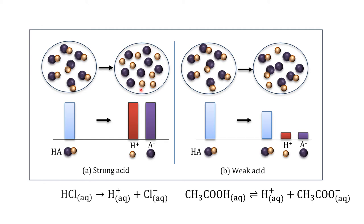If we look at it quantitatively: if you have one mole of acid, by stoichiometry one mole of acid gives one mole of proton and one mole of chloride ion. So the amount of proton present at the end is exactly the same as the initial amount of acid. At the end state we see only positive and negative ions — no HA remaining.